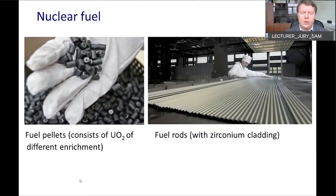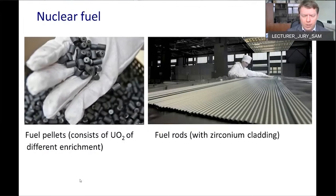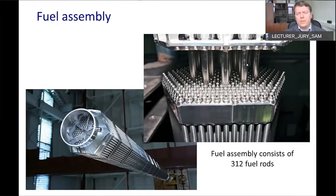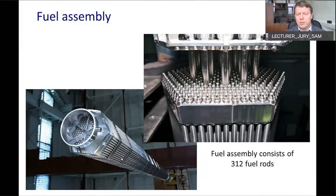A few words about nuclear fuel. When we produce uranium dioxide fuel, it is not dangerous — we can work with this fuel by hand; it is safe for humans. You can see the fuel rods here with zirconium cladding. The next step is collecting fuel rods into fuel assemblies. One fuel assembly includes more than 300 fuel rods.